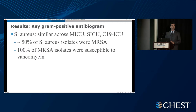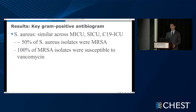For gram-positive results, the gram positives in our HAP/VAP population were essentially all Staph aureus, with one E. faecalis organism. Fifty percent of Staph was MRSA, and 100% of MRSAs were susceptible to vancomycin. This lends credence to the IDSA recommendation that if you have a significant proportion of Staph aureus isolates being MRSA, you should use vancomycin as an empiric choice.